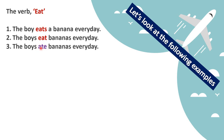The verb also changes with reference to tense, not just the number of the subject. 'The boy ate' - 'ate' is past tense, talking about what happened in the past. 'The boys ate bananas every day.' The same verb 'eat' is changing its form based on the number of the subject as well as the time reference. When a verb changes according to the subject and tense, it is called a finite verb.